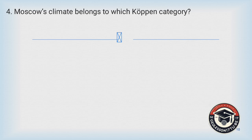Question number four: Moscow's climate belongs to which Koppen's climate classification? A) Csa, B) Dfb, C) Af, D) ET.